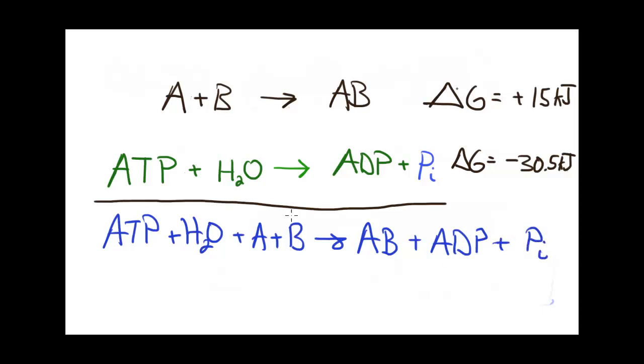Now, if I add the equations down in that fashion, I can do the same thing to the free energies to predict the free energy of the coupled process. So if I do so in this case, I will get negative 15.5 kilojoules for my delta G.